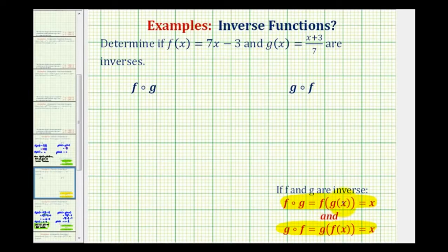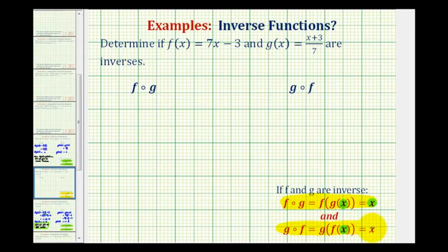Notice here the initial input into g is x, and the final output of the composite function is also x. The input and the output are the same because the two functions undo each other in this direction. And also for g of f of x, the initial input into f is x, and the final output of the composite function is also x, again verifying that the two functions will undo each other because the initial input and the final output are both the same.